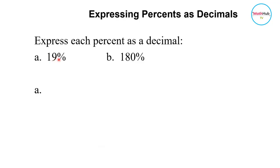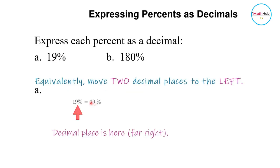I have 19%. I want to express this as a decimal. It's like dividing by 100. All you need to do is move the decimal point two places to the left.